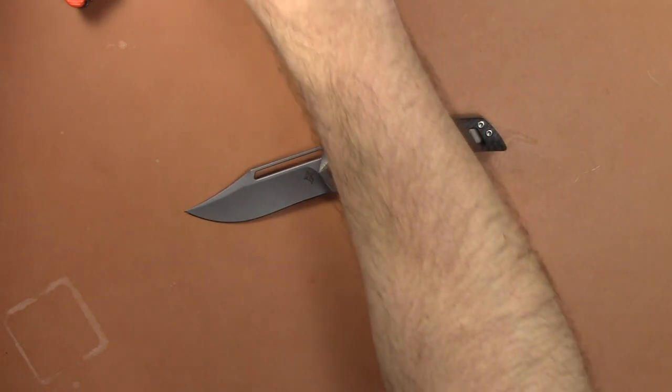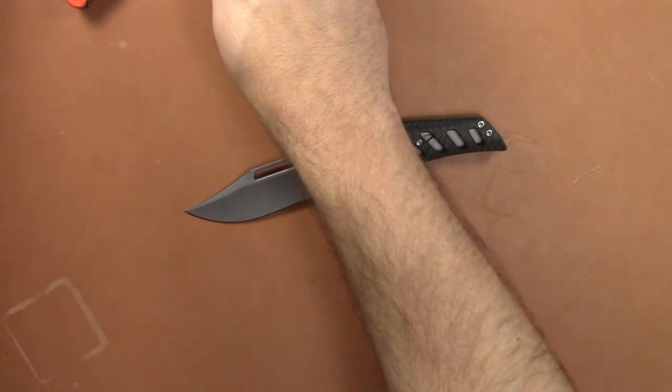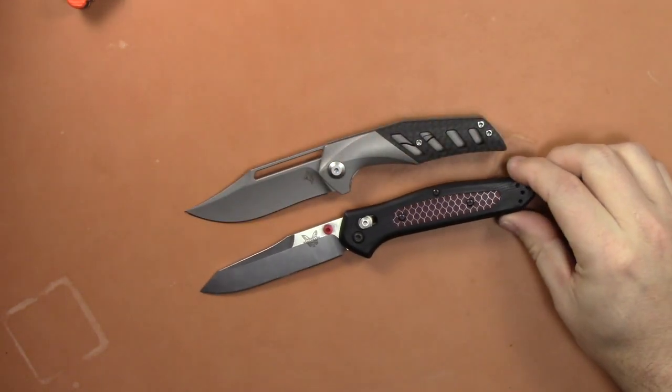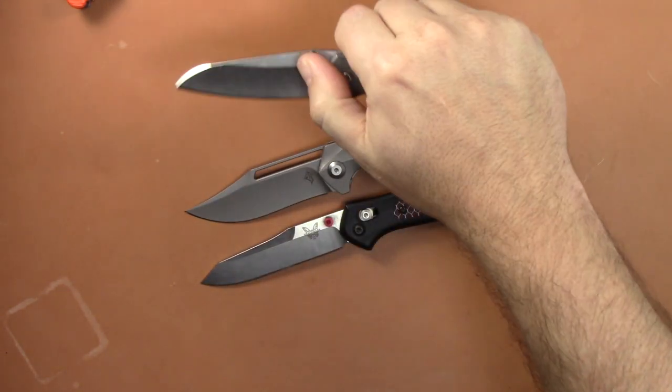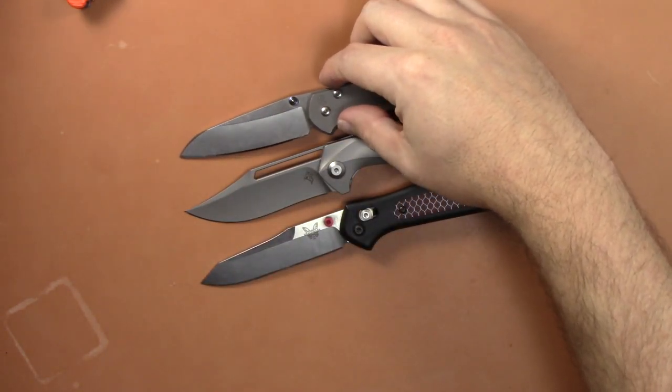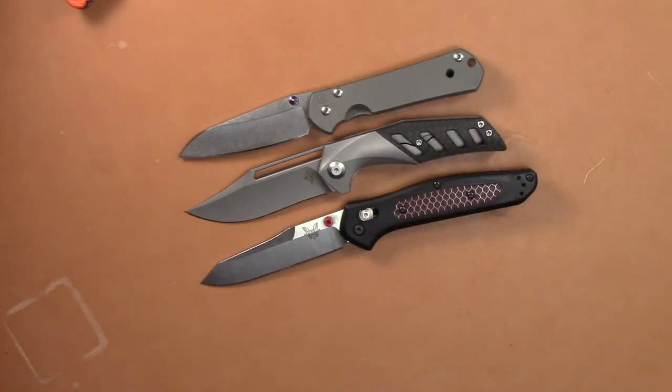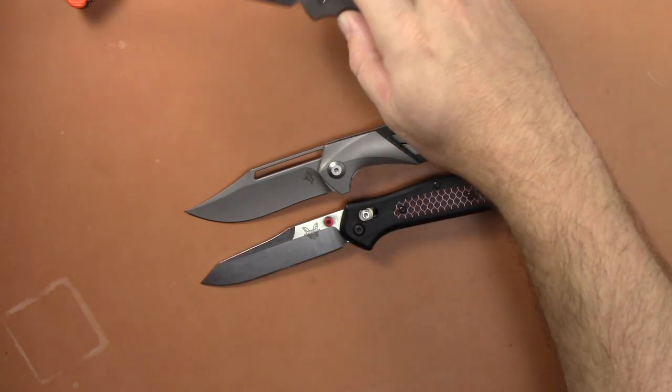So before we get into it let's do some size comparisons with some commonly known knives. Got the Benchmade 940, a little bit smaller. The Chris Reeve Small Sebenza, a little bit bigger, not a lot, but a little bigger than the small sub.